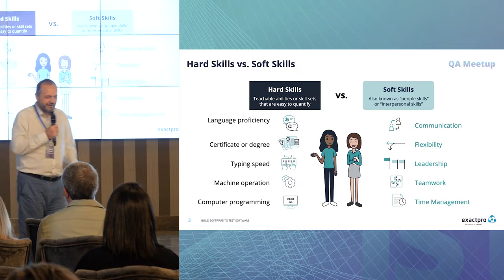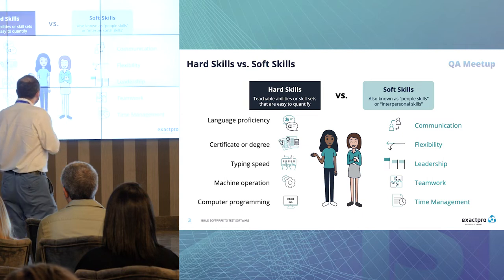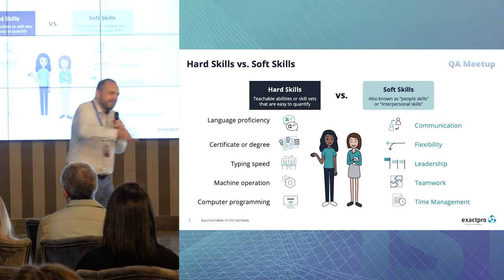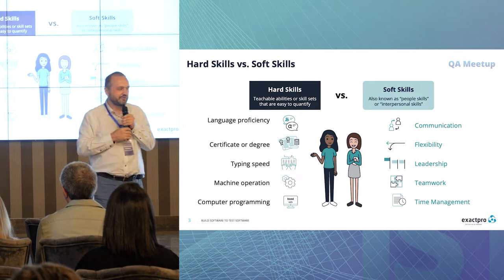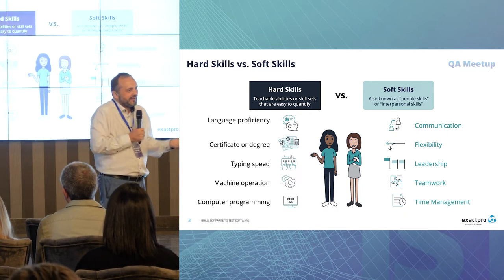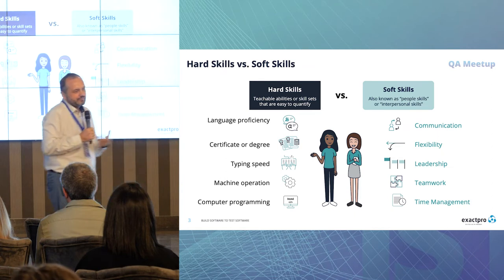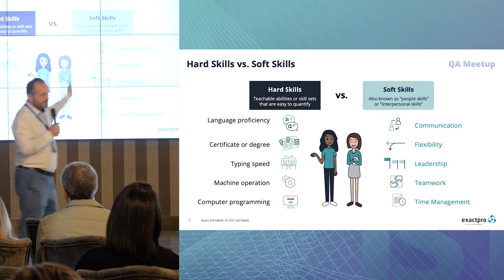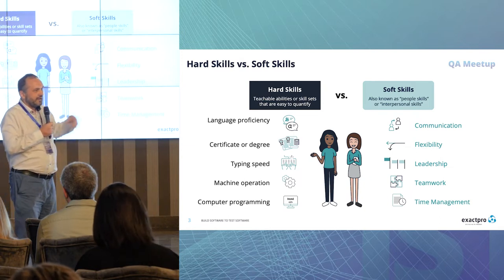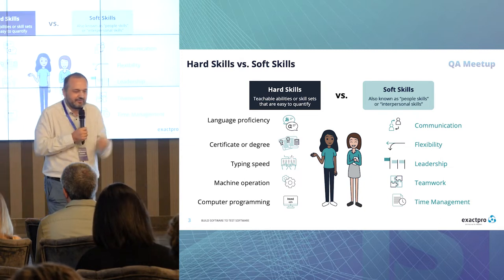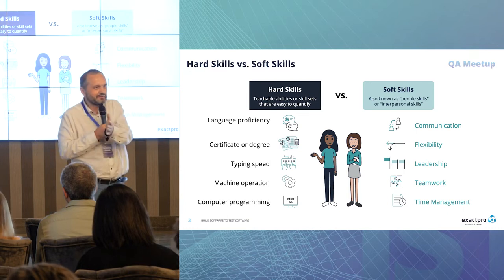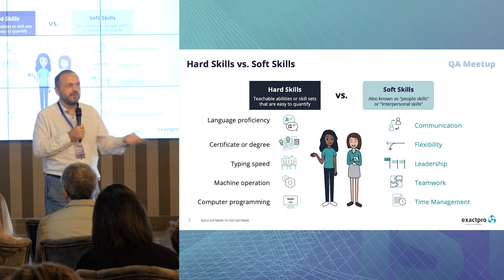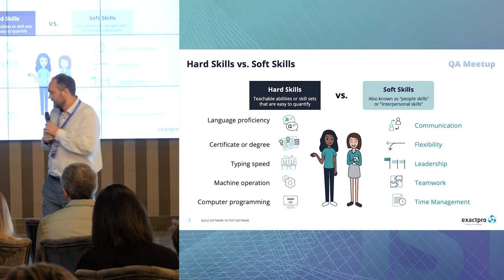Flexibility — I'm not sure you can measure flexibility. Or leadership: it's clear to everyone when someone has good leadership, but your feeling could be deceiving. Teamwork and time management — you see the difference. It's like testing: you have functional and non-functional testing, and you cannot say which one is more important. Both parts are really, really important.